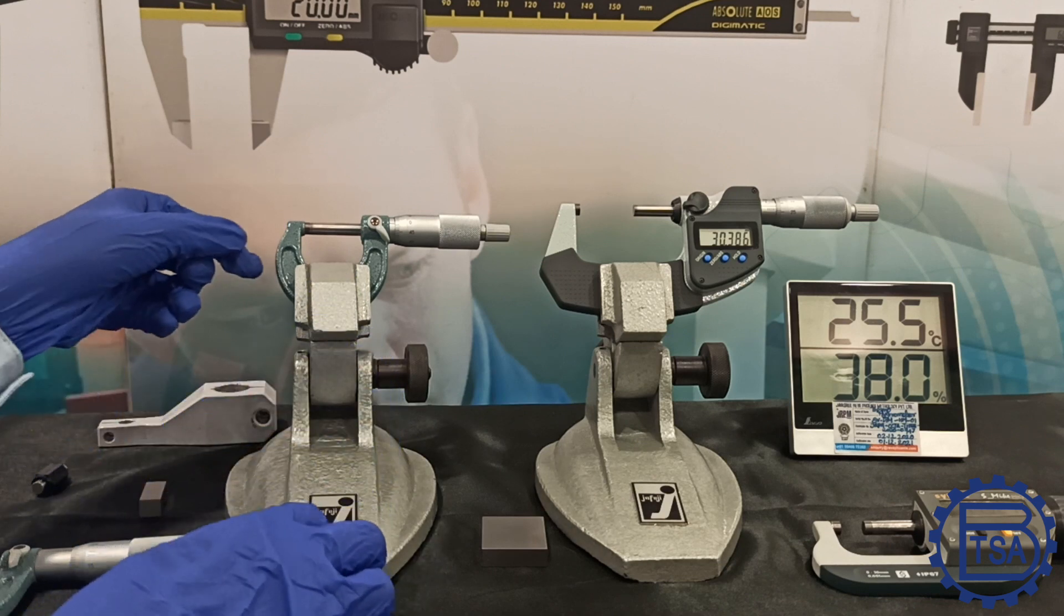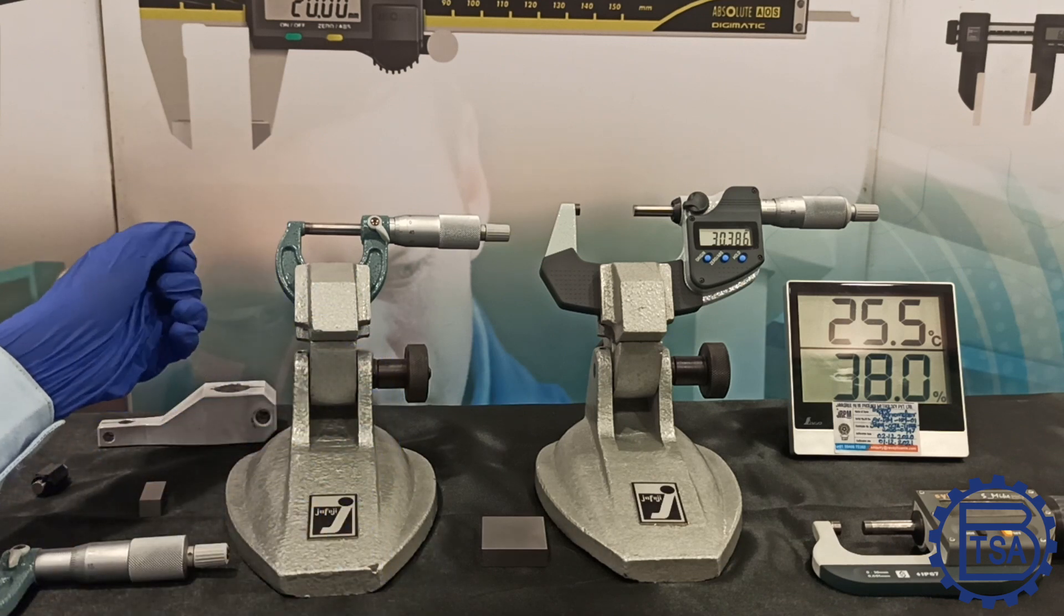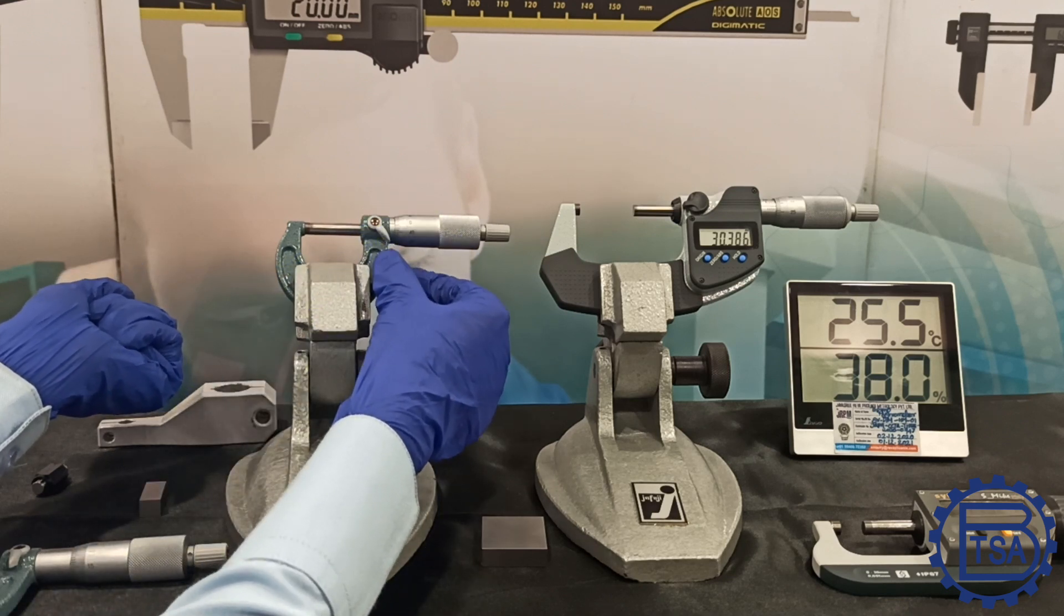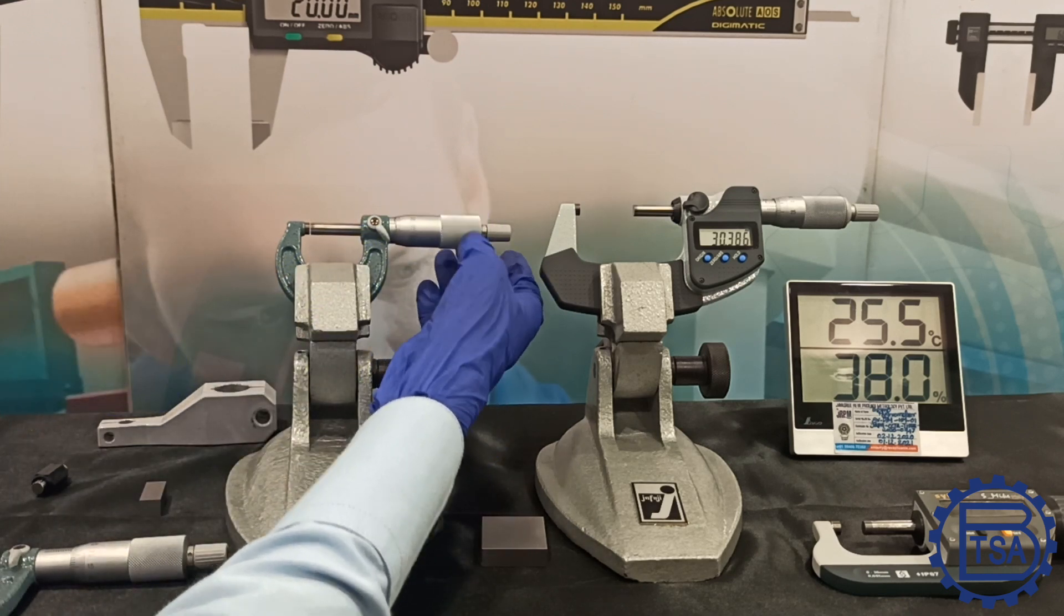We can use a micrometer stand to measure the component easily. Before rotating the thimble or ratchet, unlock the locking lever. Clean the measuring faces with a clean cloth.